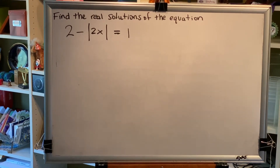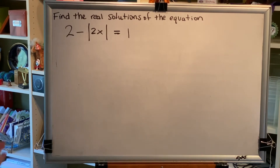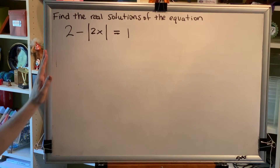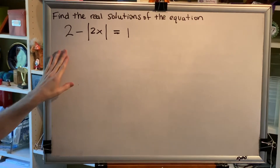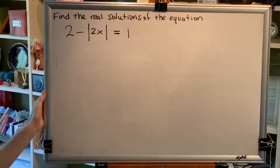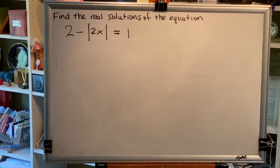The topic of this video is solving absolute value equations. Let's look at some problems. Find the real solutions of the equation: 2 minus the absolute value of 2x equals 1.